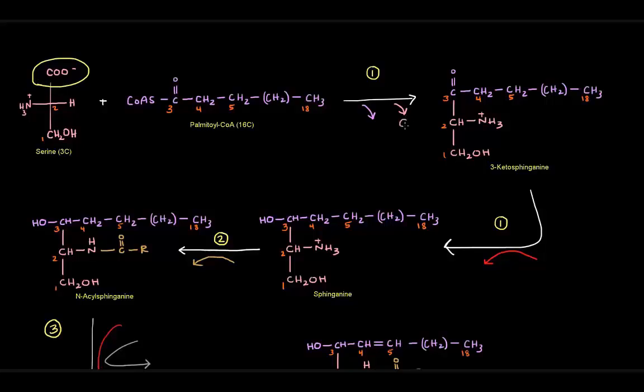What leaves is this third carbon here that's part of the carboxyl group. That's going to leave as carbon dioxide when these two condense. Another thing is that the coenzyme A will also leave. Essentially, we'll have the chain of palmitoyl-CoA connected to the serine. Carbon number two is sort of going to be connected to carbon number three, and that's what we get over here in this molecule, 3-ketosphingosine. We've got these two carbons here from serine and the rest of this molecule coming from palmitoyl-CoA.